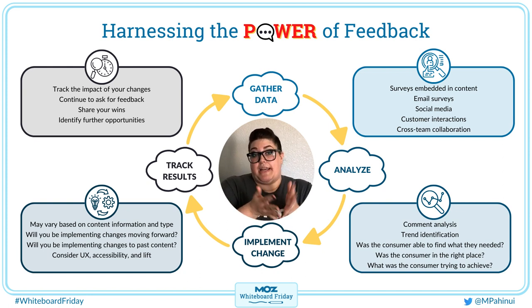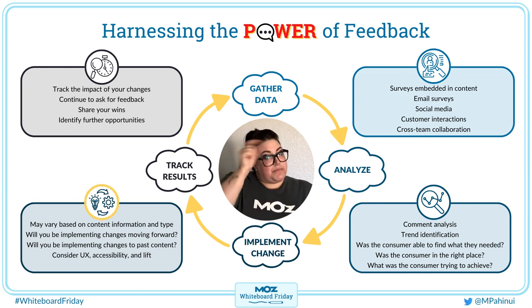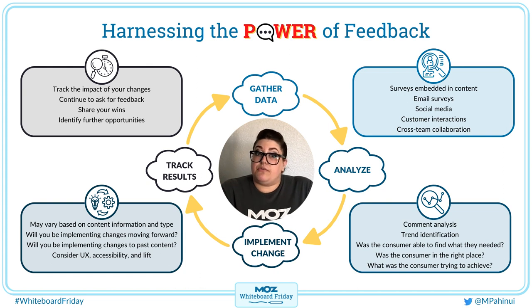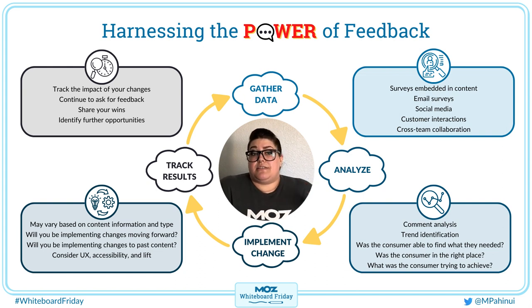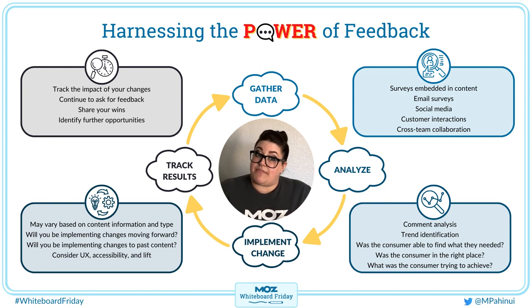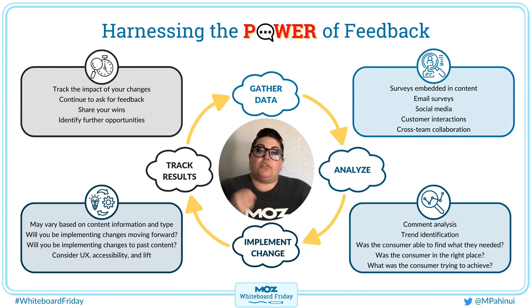Now that we've identified areas for improvement, it's time to implement changes to that content. This may be as simple as adding an FAQ to answer a specific question, or as involved as writing a new workflow or troubleshooting guide. As a specific example, some changes we implemented based on customer feedback include adding quick links to all of our pages for easier navigation, creating separate pages for each of our keyword metrics, and building out multiple workflows based on questions that customers have asked.